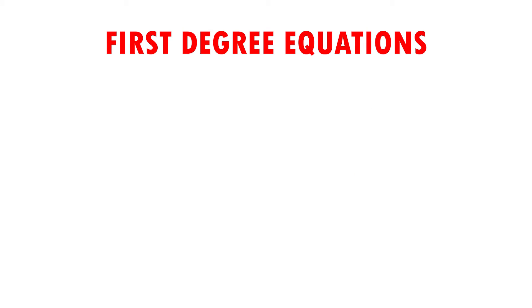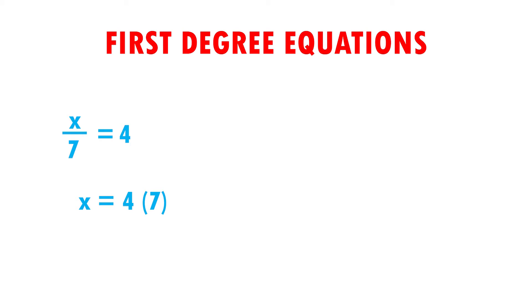Here I have our next example. I have that x over 7 is equal to 4. To know how much x is worth, I have to clear it — that means it has to be left alone. So I have that x is equal to 4, and the 7 that was dividing passes to the other side of the equal sign doing the opposite of dividing, which is multiplying. And I have that x is equal to 4 times 7. When performing the operation, I have that x is equal to 28.